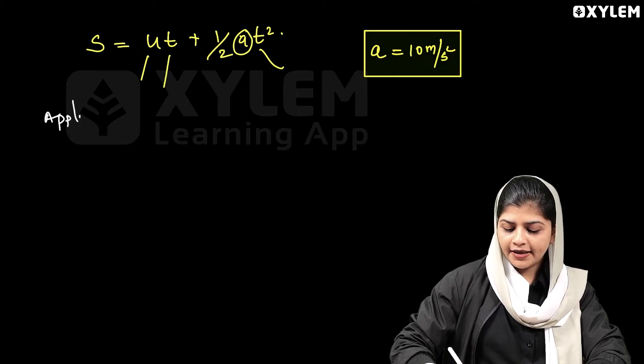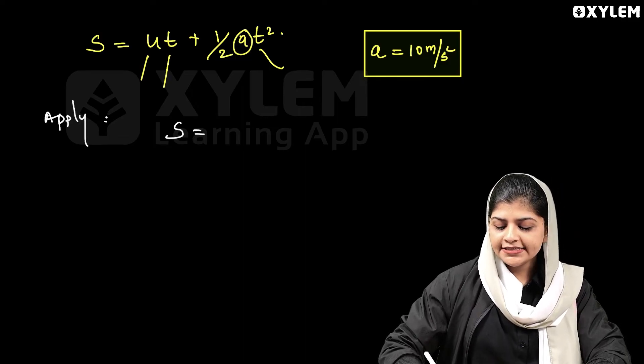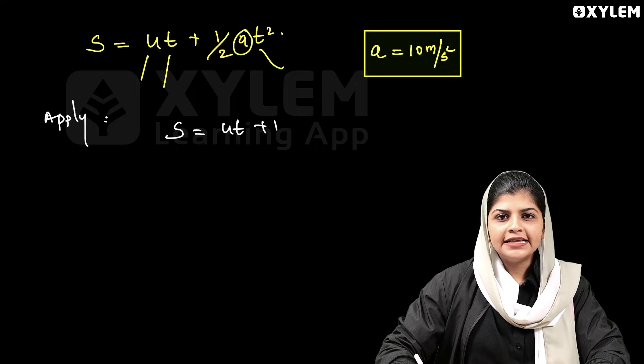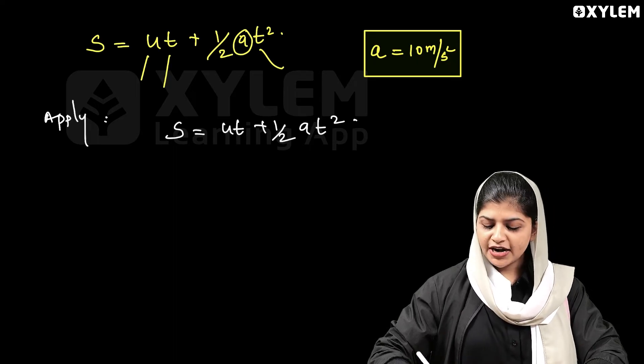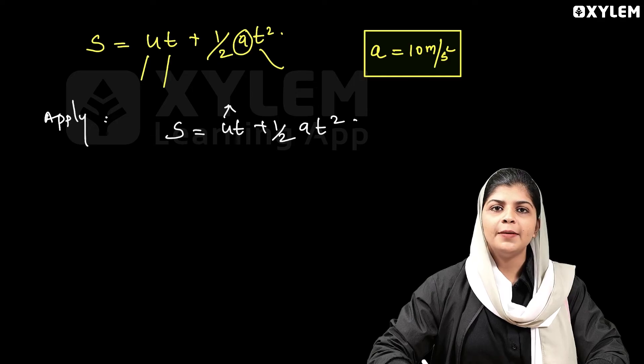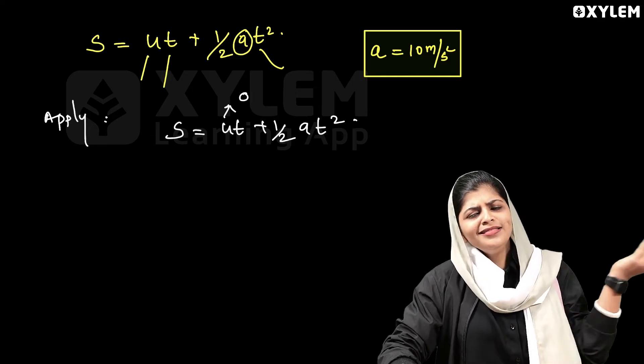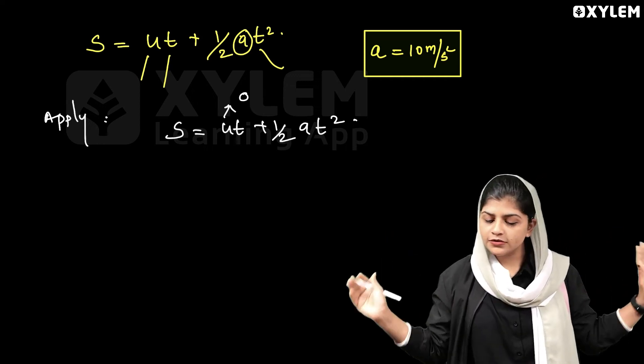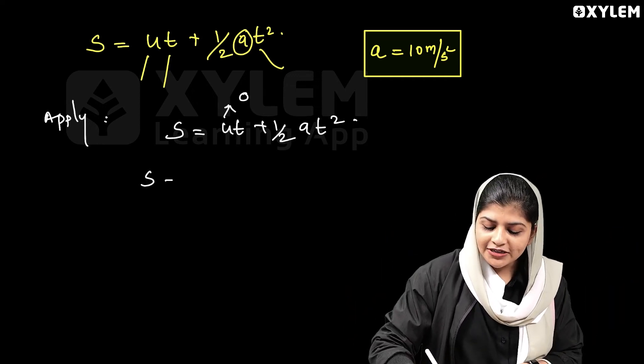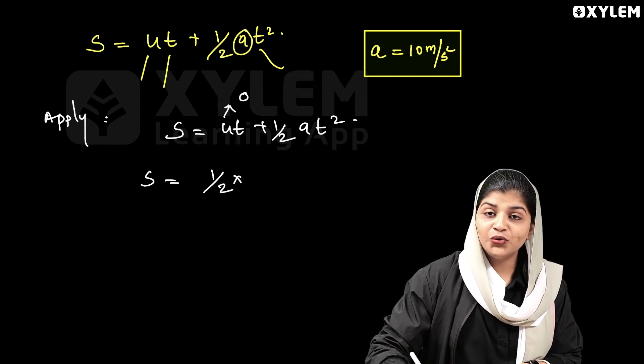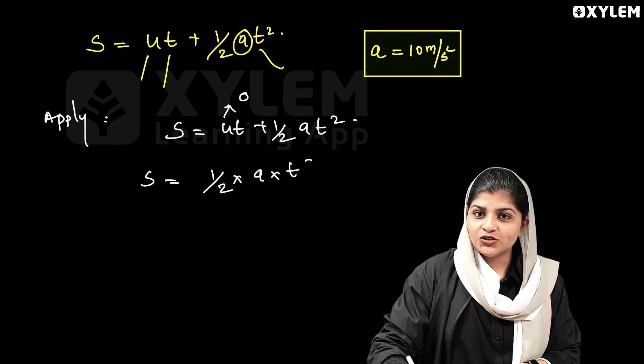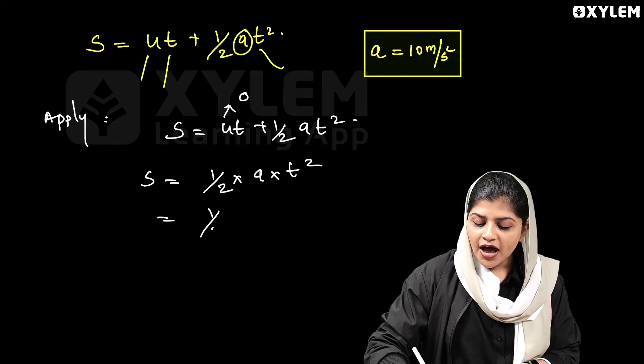Apply s equals ut plus half at square equation. If u is equal to 0, then this term is 0. Zero into t, if you multiply by zero, it cancels. So s is equal to half into a into t square.